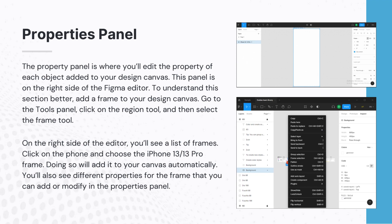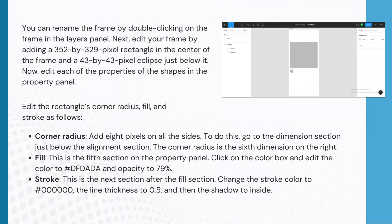The Properties panel is where you'll edit the properties of each object added to your design canvas. This panel is on the right side of the Figma editor. To understand this section better, add a frame to your design canvas. Go to the Tools panel, click on the Region tool, and then select the Frame tool. On the right side of the editor, you'll see a list of frames. Click on Phone and choose the iPhone 13 Pro frame. You can also rename the frame by double-clicking on it in the Layers panel.